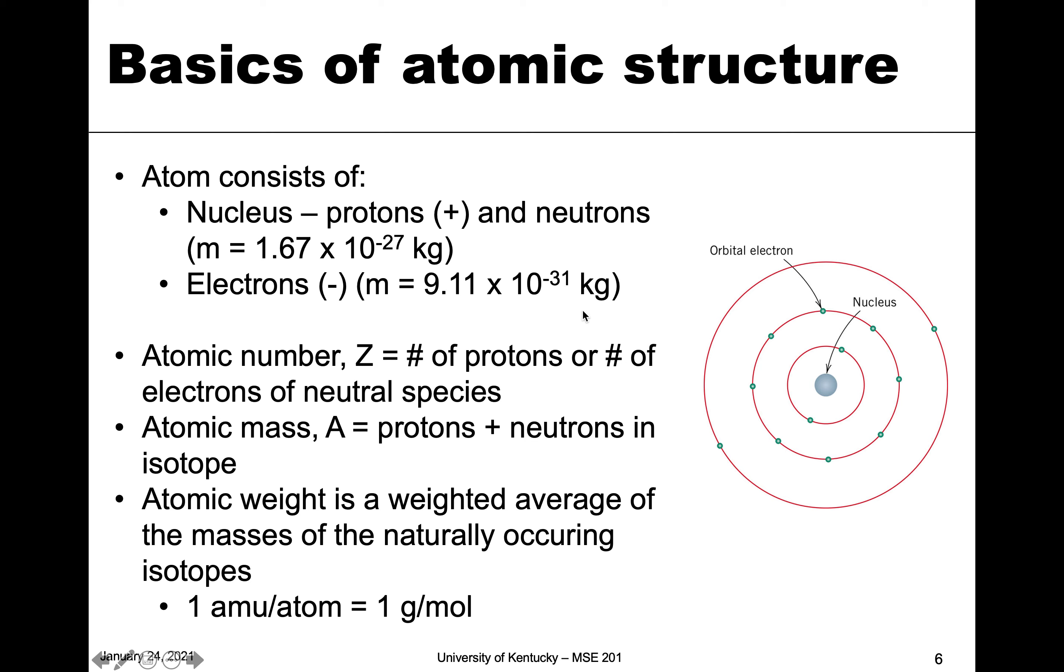An atom's atomic number, usually termed capital Z, is defined as the number of protons or the number of electrons of the neutral species—these should be the same. The atomic mass, defined as A, is the mass of the protons plus neutrons. If you're asking where are the electrons, keep in mind that electrons are so much less mass they don't really account for enough to affect the mass, so they're not included in that weight. This is in an isotope, so different isotopes will have different numbers of neutrons.